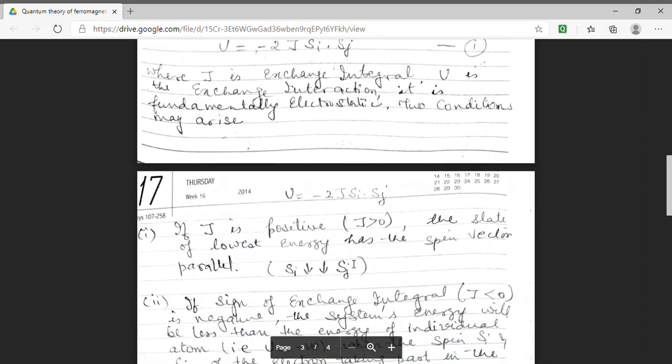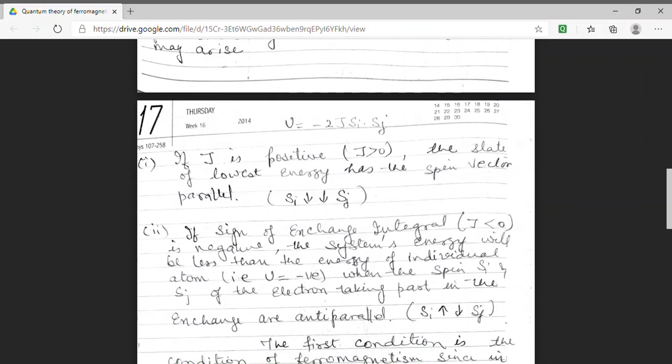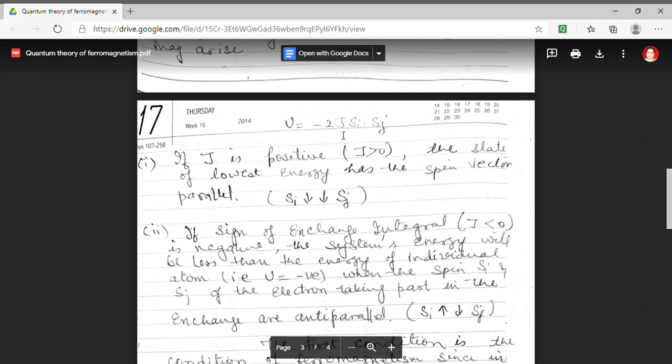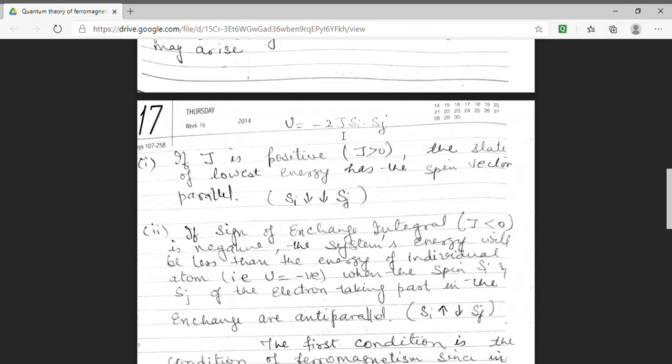Now I am taking the second condition. This second condition, I am taking the exchange integral to be negative. Now in this condition for the lowest energy state, that means for U to be negative, we have J negative and this condition will take place only when the spin of i and j, that means s_i and s_j, these spins are antiparallel. So if one electron has spin up, other must have a spin down. So these two are the conditions for the interaction energy to be in a stable state.